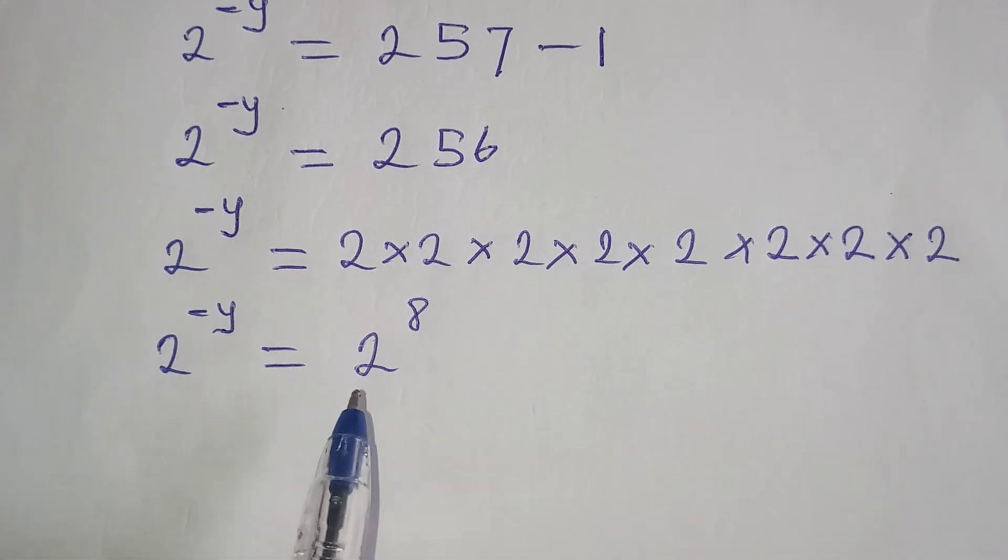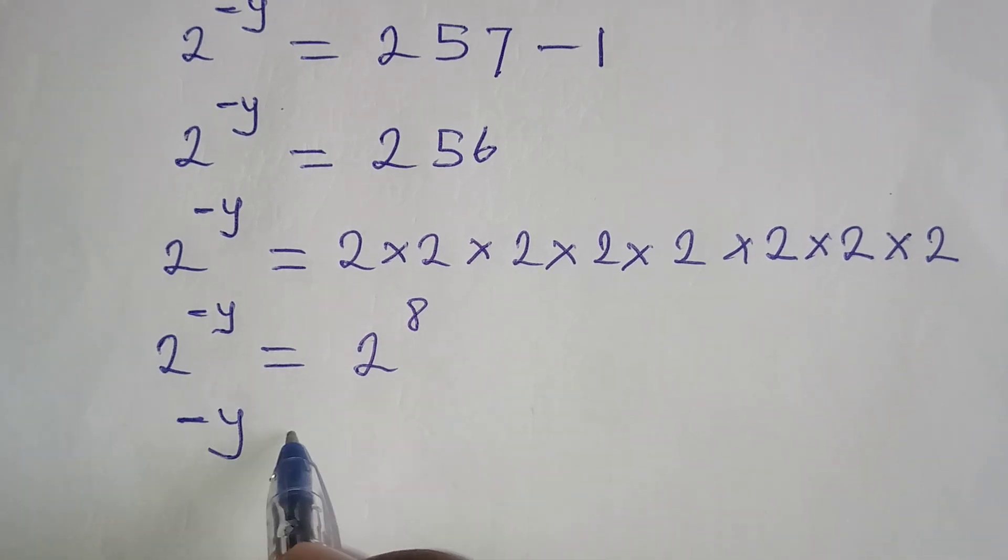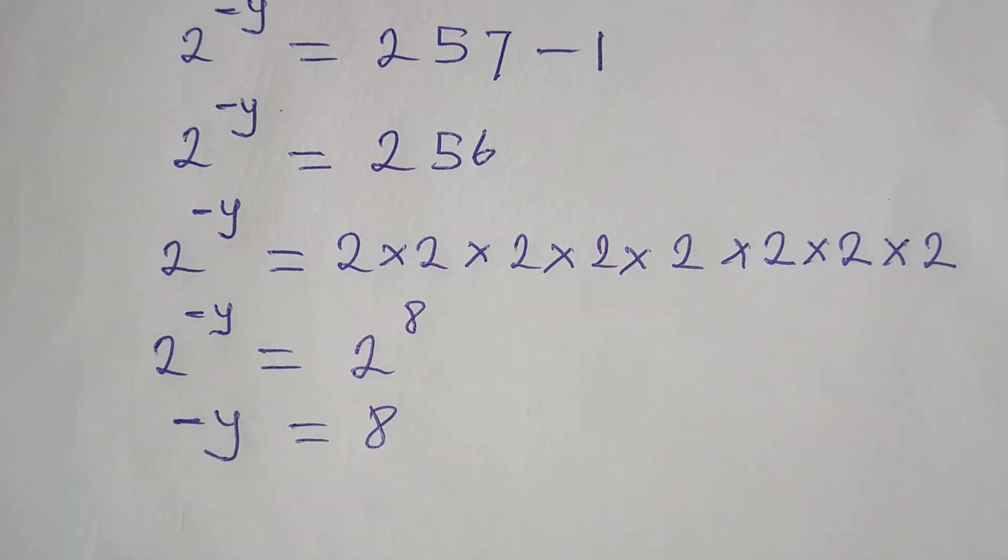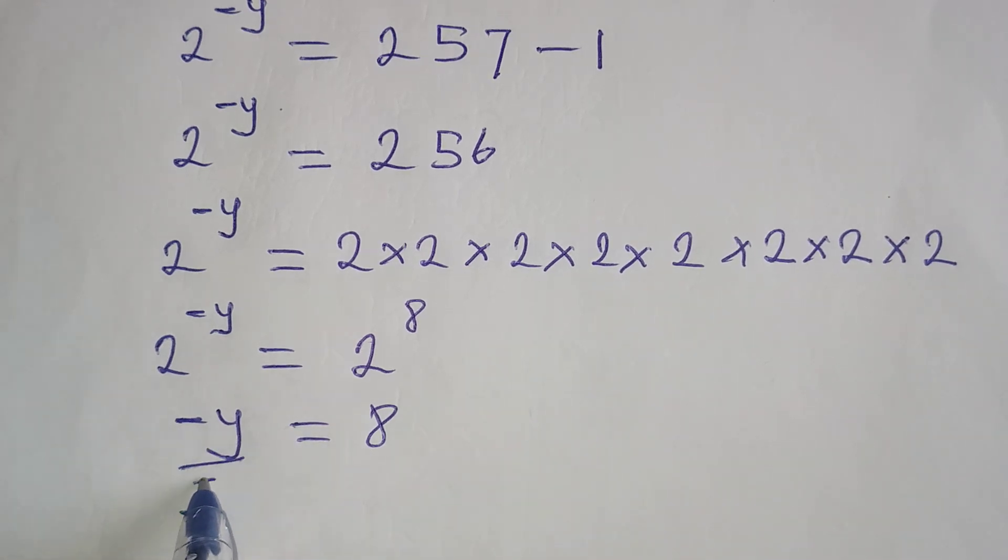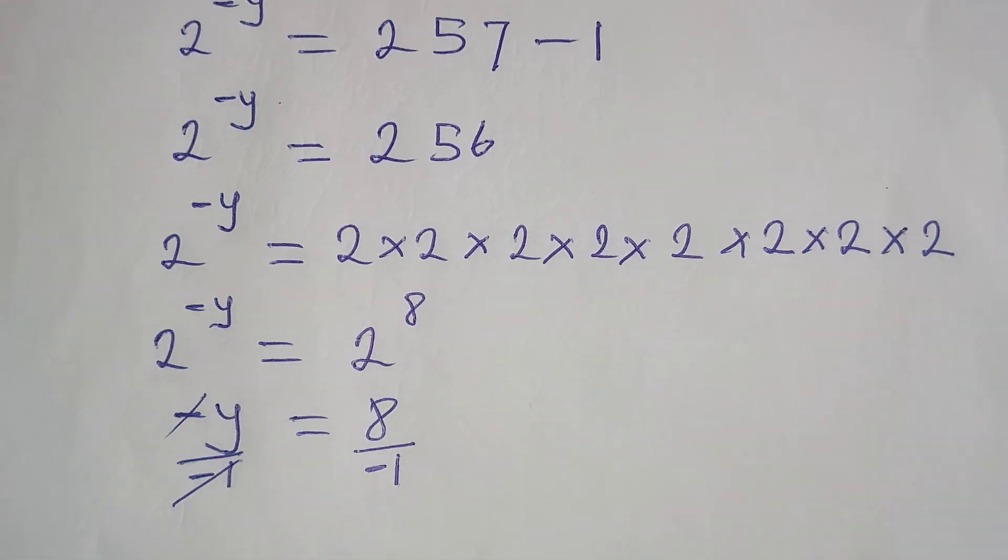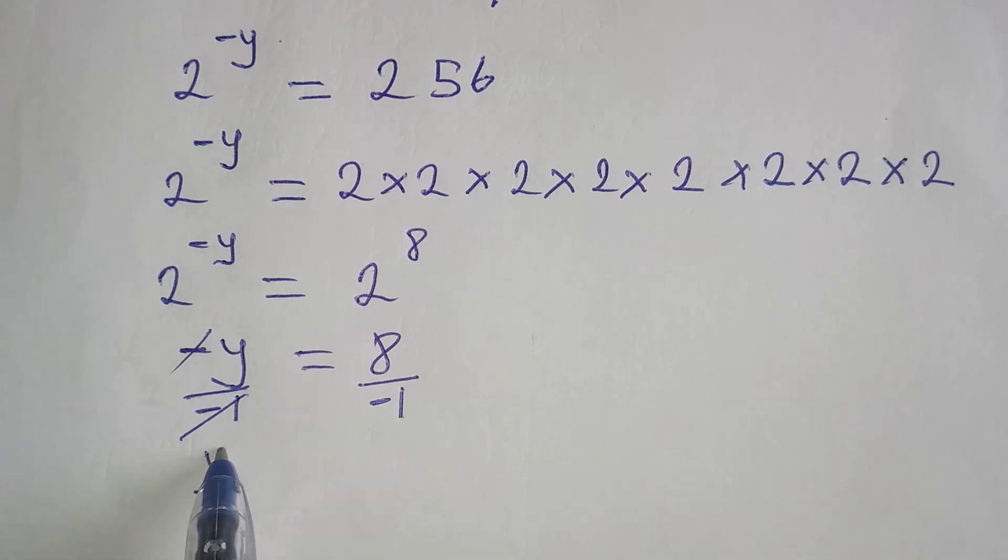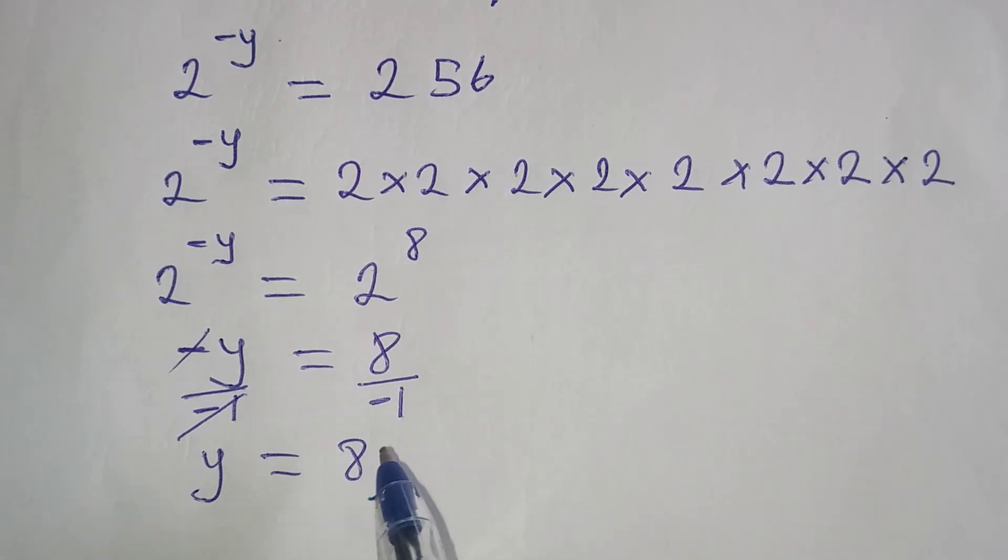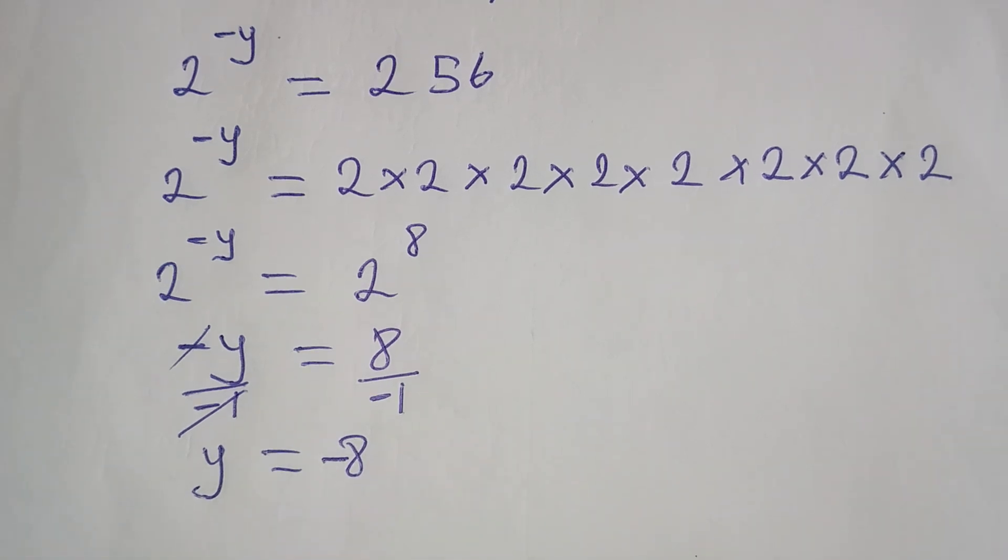Now the bases are the same, we can equate the powers. Minus y is equal to 8. And to remove this negative from here, we have to divide both sides by minus 1. So that this minus 1 will cancel the negative, and then our y is equal to 8 divided by minus 1, and that will give us negative 8.